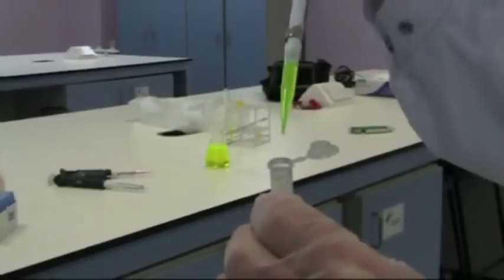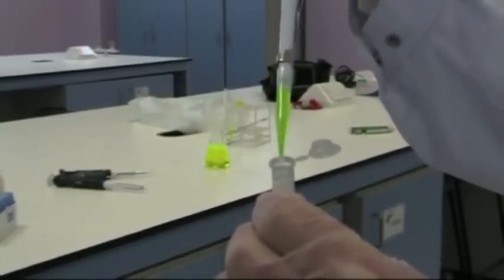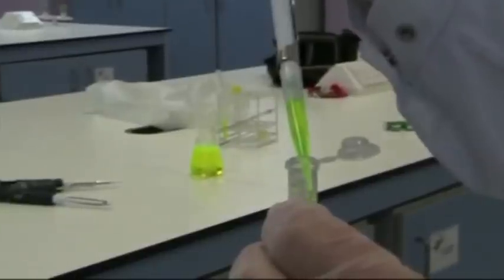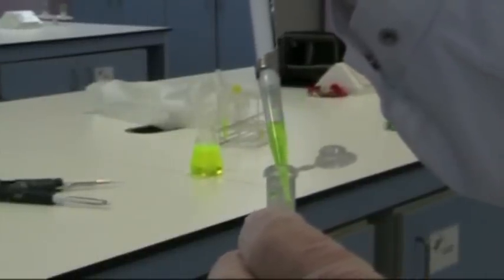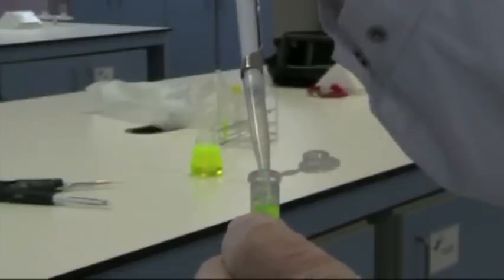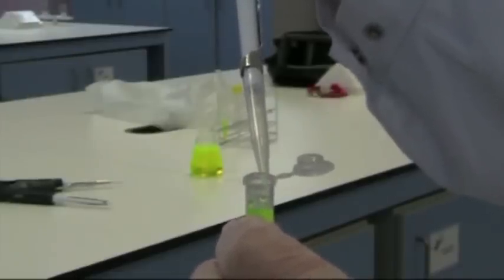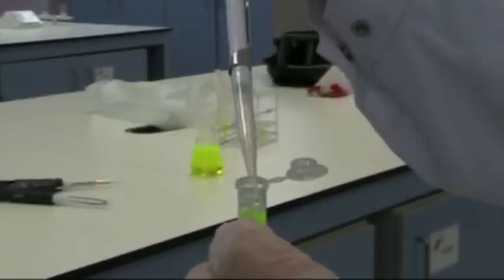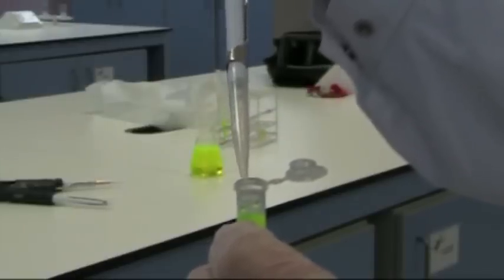We can also use surface tension to dispense the liquid. Place the tip onto the edge, and you can see the droplets are being drawn by surface tension. At this point, now my thumb is fully down to the furthest position on the Gilson, I can draw the tip away from the liquid and release.